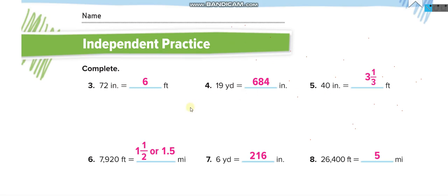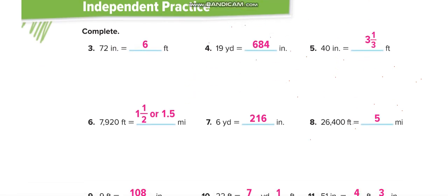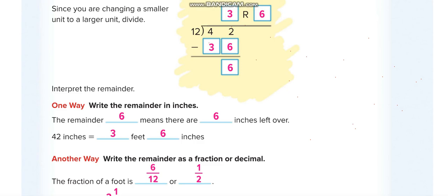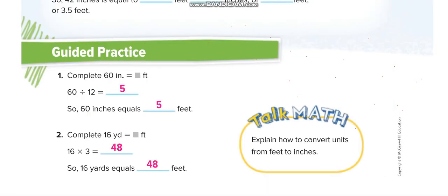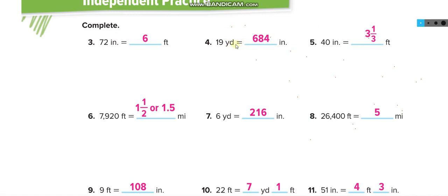Now independent practice. I'll solve some questions and you solve the rest, then match your answers. 72 inches to feet: divide 72 by 12, which gives six feet. Next: 19 yards to inches — one yard equals 36 inches, going from larger to smaller so we multiply — 19 times 36 equals 684 inches.